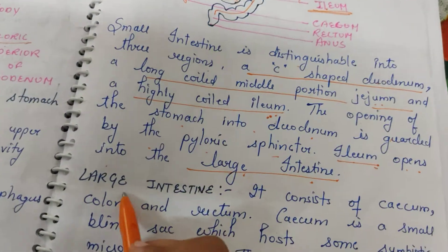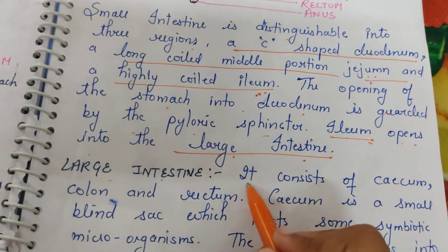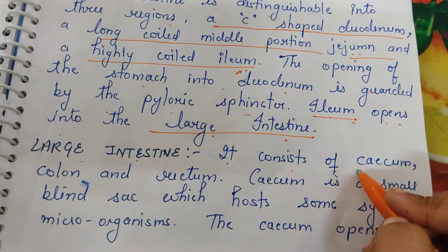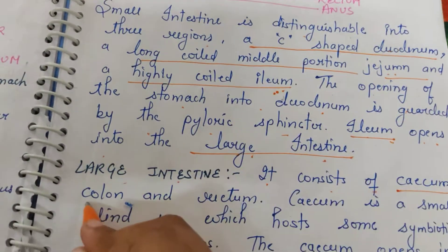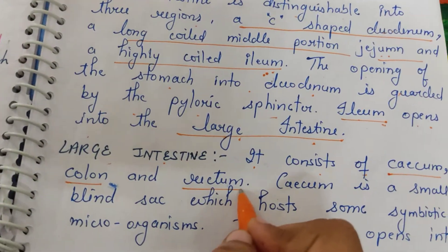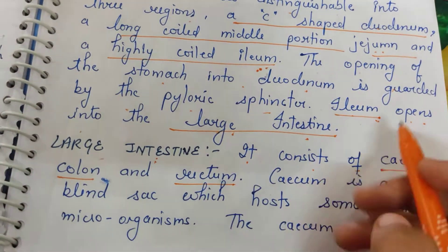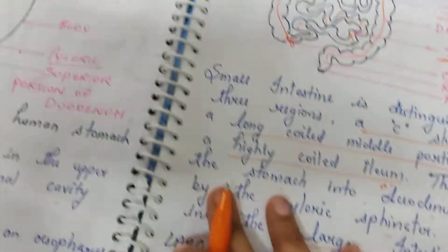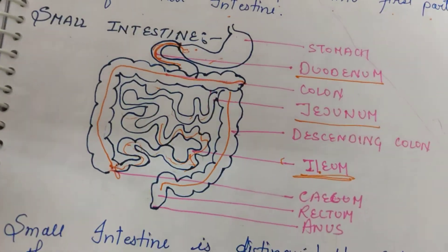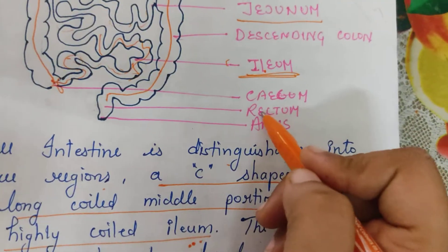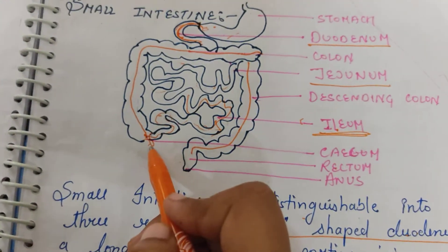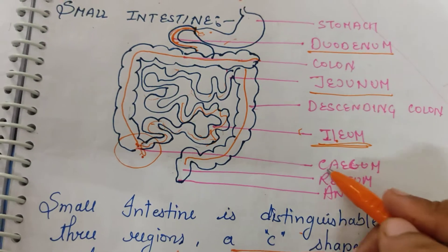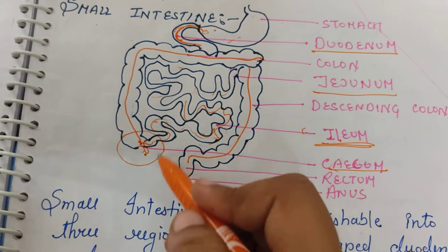Now let's start with the large intestine. It consists of three parts: cecum, colon, and rectum. The first part of the large intestine is called the cecum, which is the starting part of the large intestine.